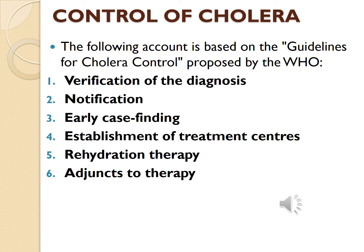For rehydration therapy, ORS solution should be given. If the patient is vomiting and cannot take it orally, intravenous rehydration should be started. As adjuncts to therapy, antibiotics should be given as soon as vomiting has stopped, usually after three to four hours of oral rehydration. Injectable antibiotics have no special advantage over oral ones. Commonly used antibiotics include fluoroquinolones, tetracycline, azithromycin, and trimethoprim-sulfamethoxazole.